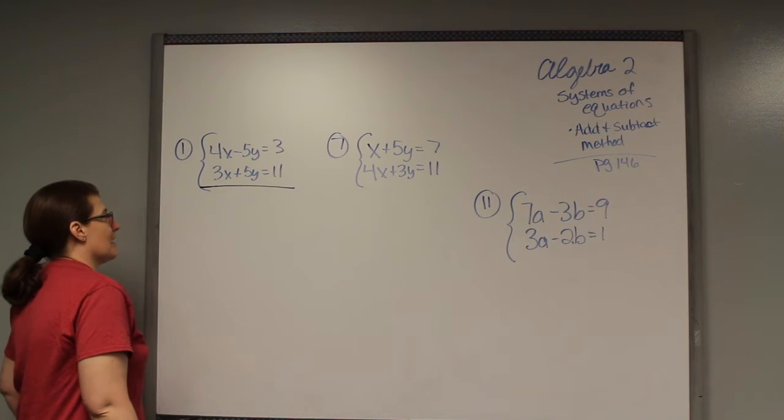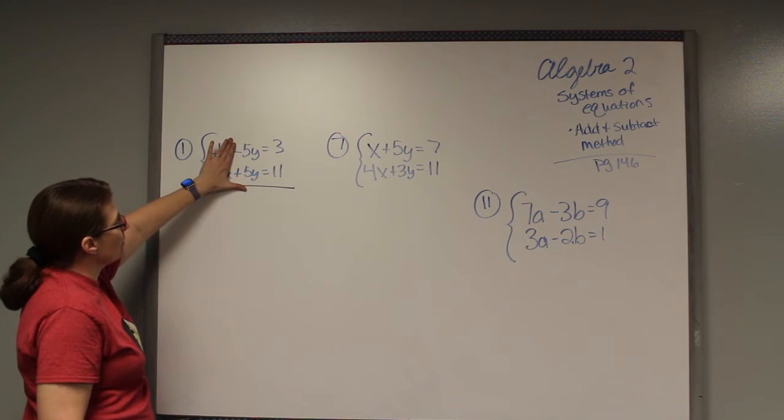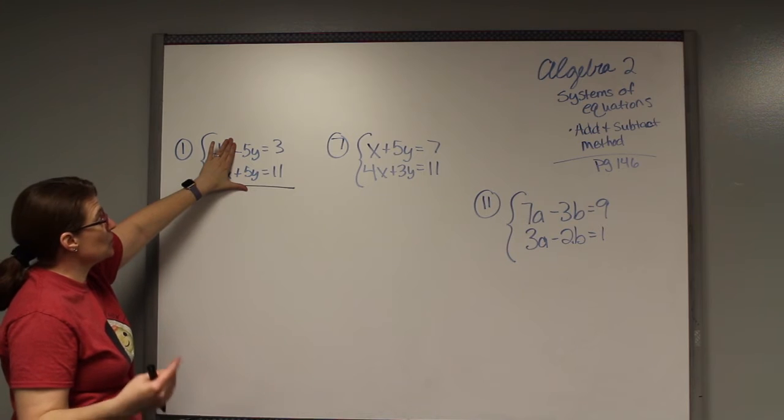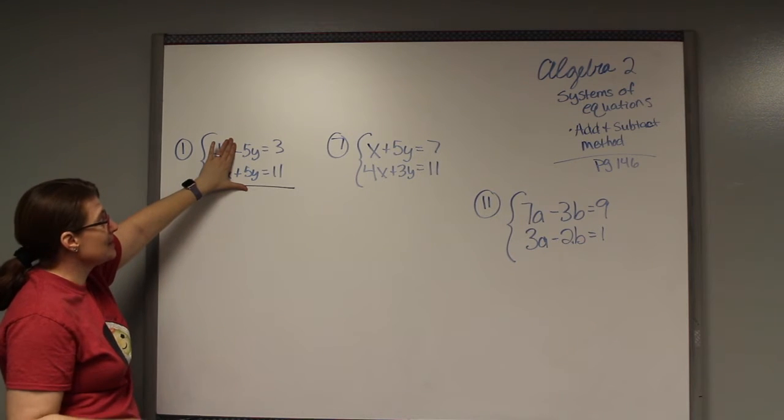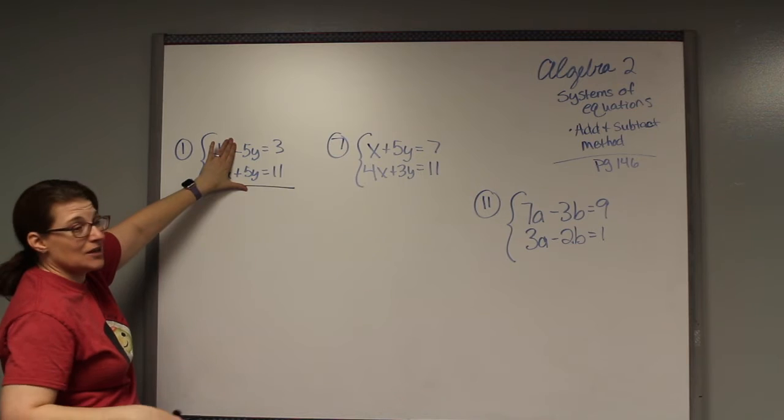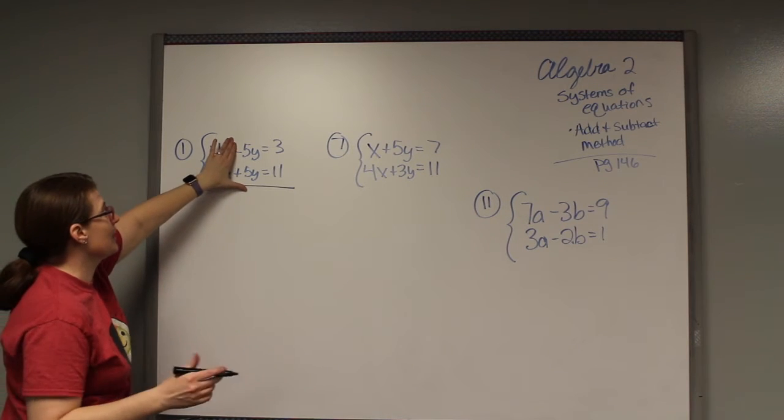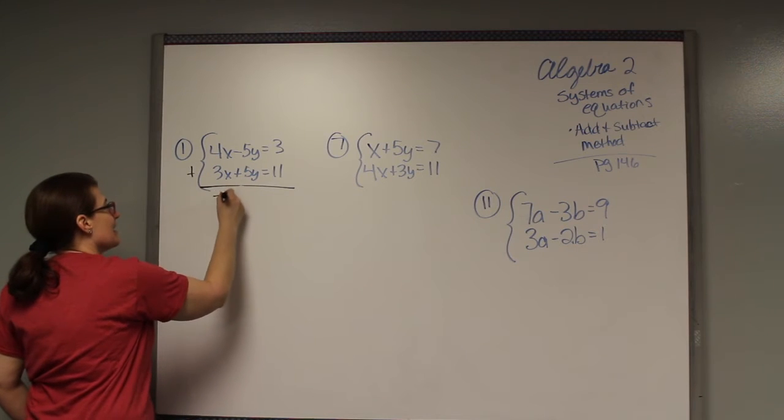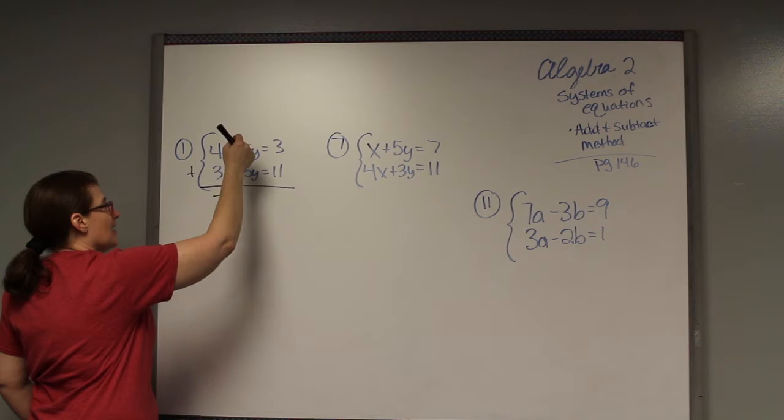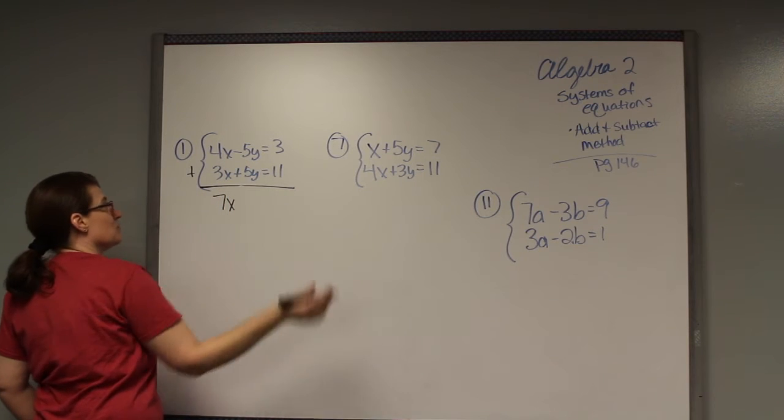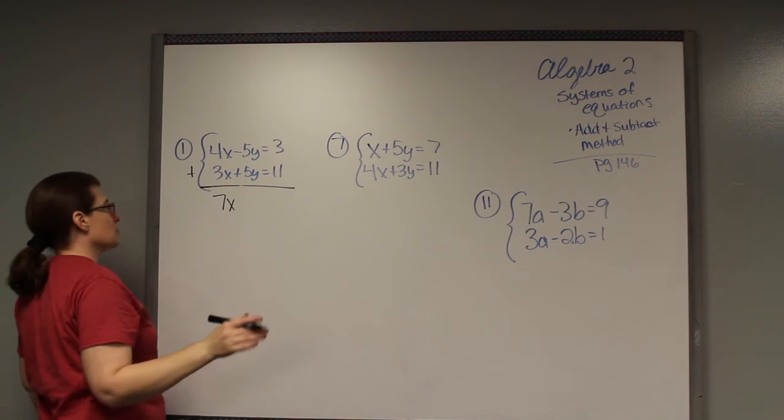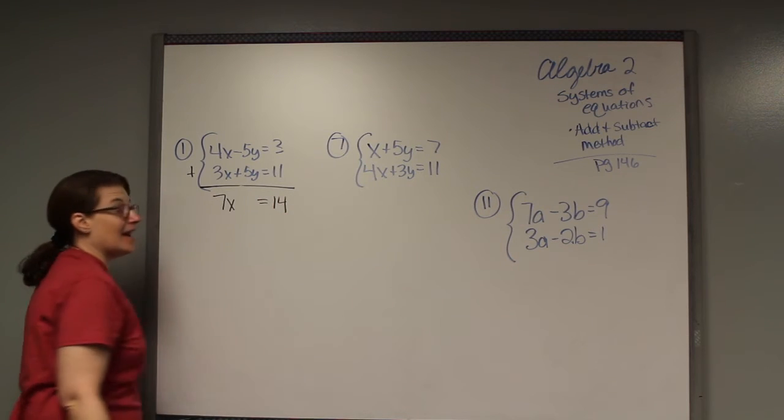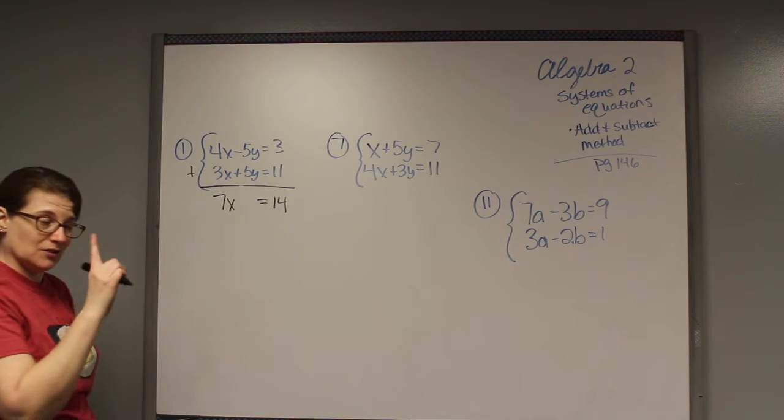This is a negative 5y and a positive 5y. Should I add them to get them to cancel out or should I subtract them? Negative 5 minus a positive 5 is negative 10, so I'm not subtracting, I'm going to add. If I add straight down, 4x plus 3x gives me 7x. Negative 5 plus positive 5 gives me nothing, it cancels out. And 3 plus 11 gives me 14.